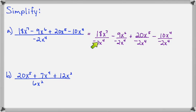So, 18 divided by negative 2 is negative 9, and x to the 7th divided by x to the 4th is x to the 3rd. Then, negative 9 divided by negative 2 makes positive 9 over 2. 9 over 2 cannot be reduced, so I'll just leave it like that. And then, x to the 6th over x to the 4th is x to the 2nd.